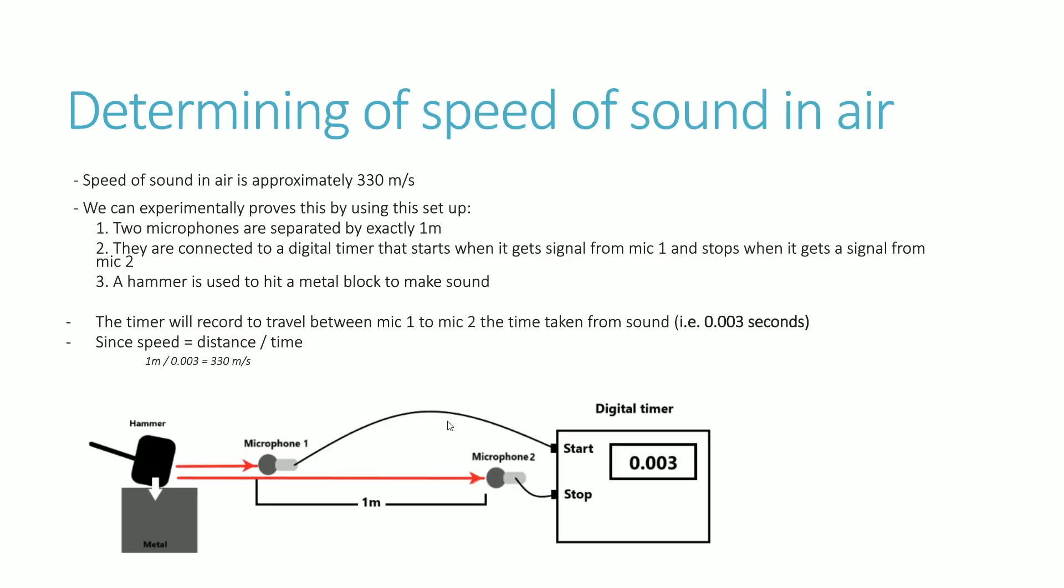How do we go about maybe determining the sound of air, sorry speed of sound in air? We discussed that approximately the value should be around 330 meters per second. Can we prove this experimentally? And the answer is yes by using a setup like this where you've got a metal that is going to produce the sound. You've got the hammer that you're gonna hit the metal with to produce the sound. We're gonna have two microphones that are at a fixed distance away from each other. You've got the first microphone here and you've got the second microphone here and you've got the separation between the microphones being exactly, let's say, one meter.